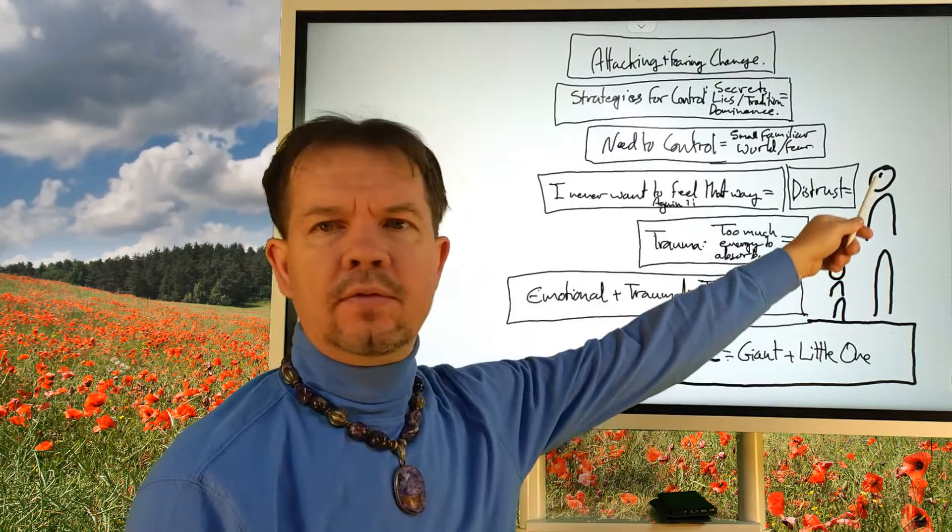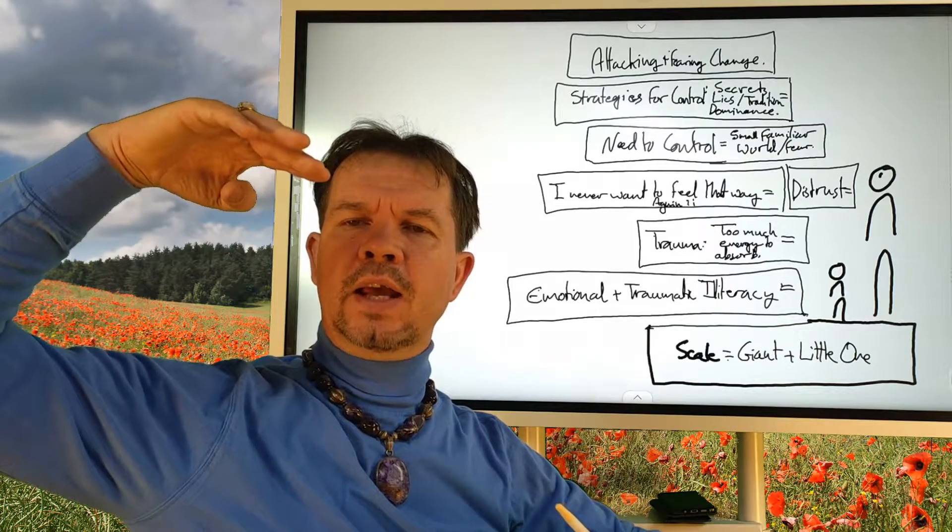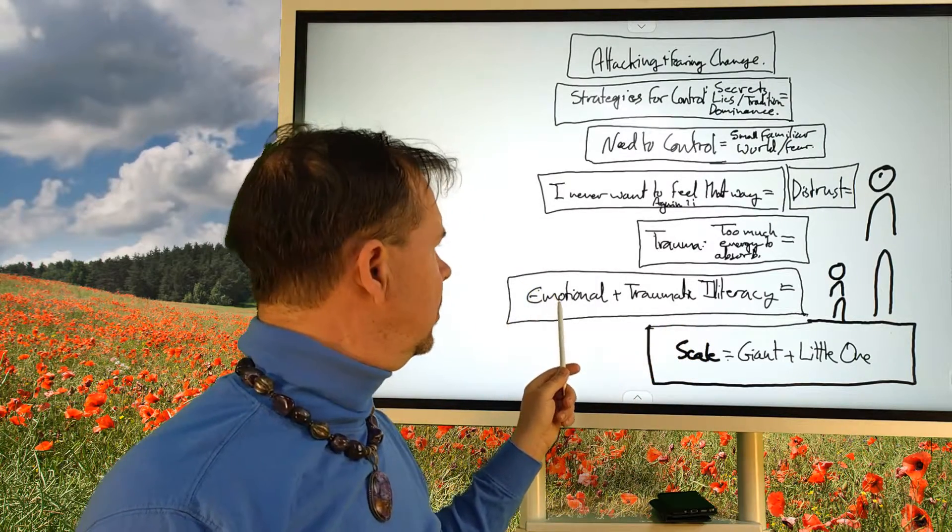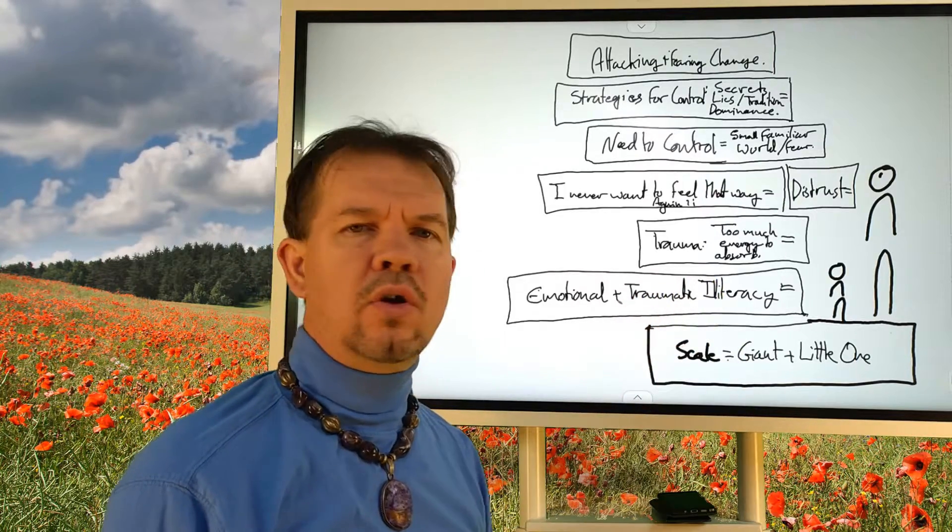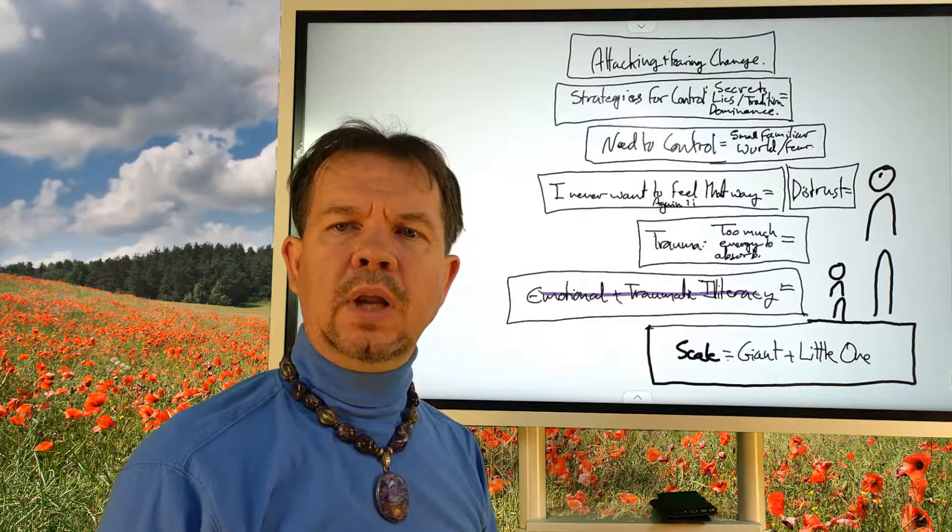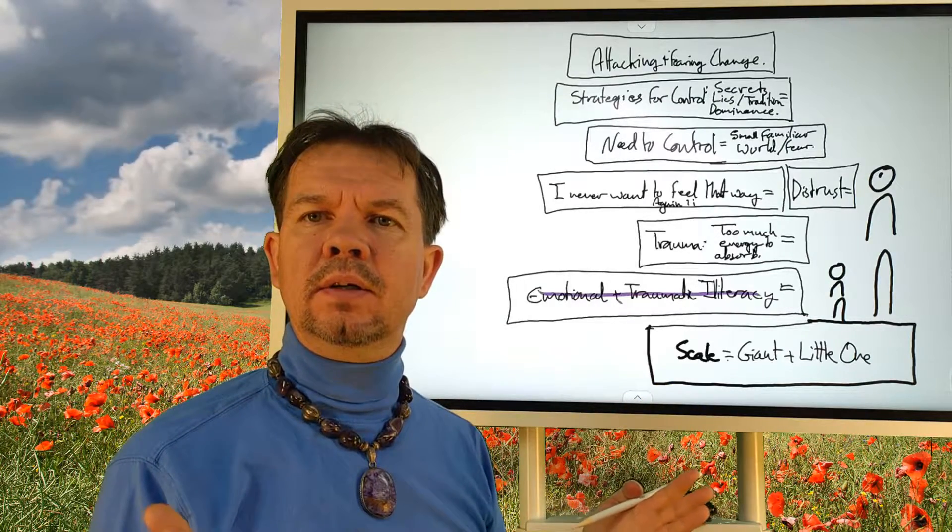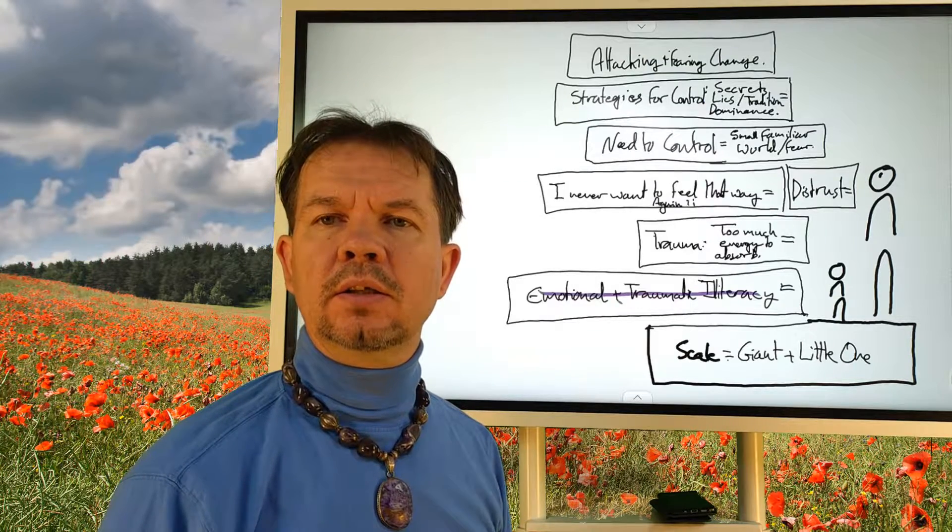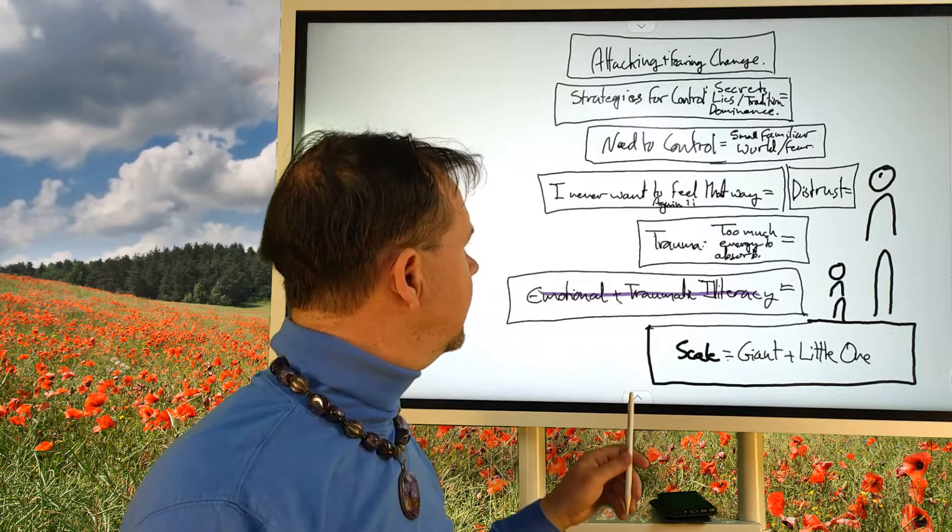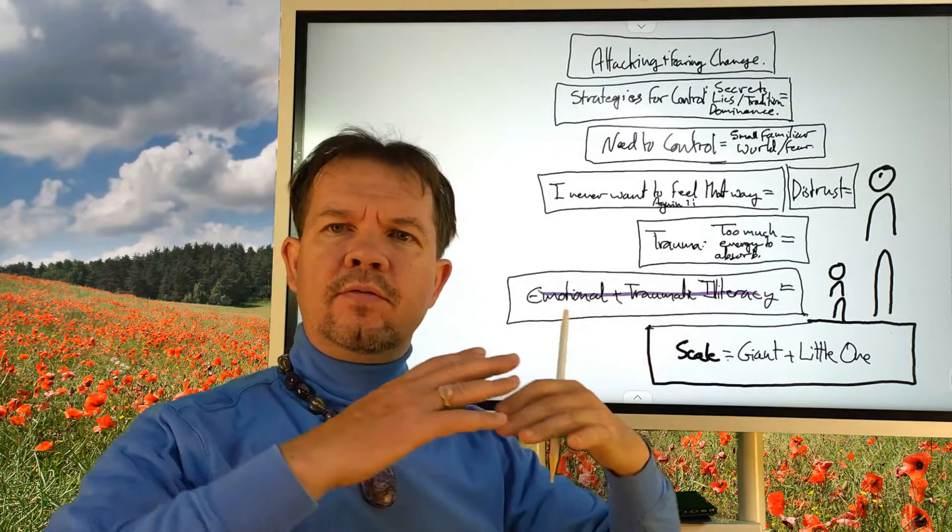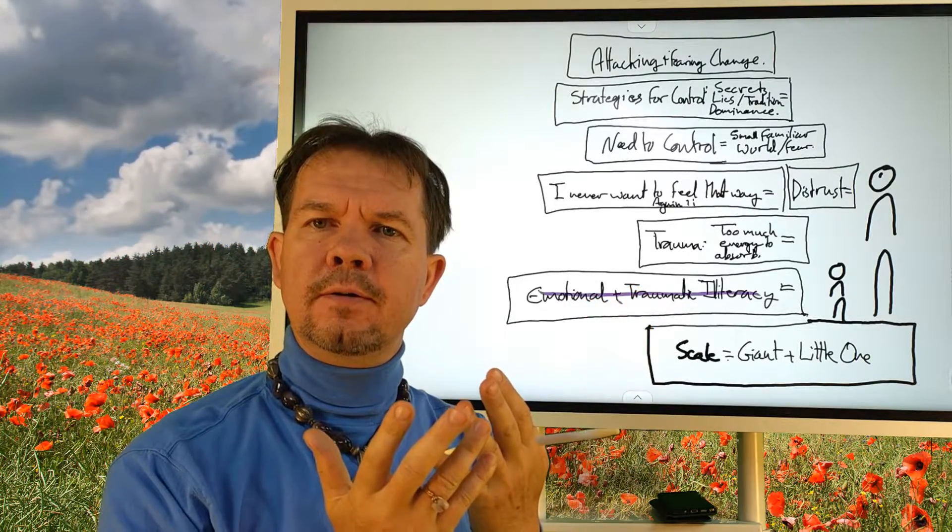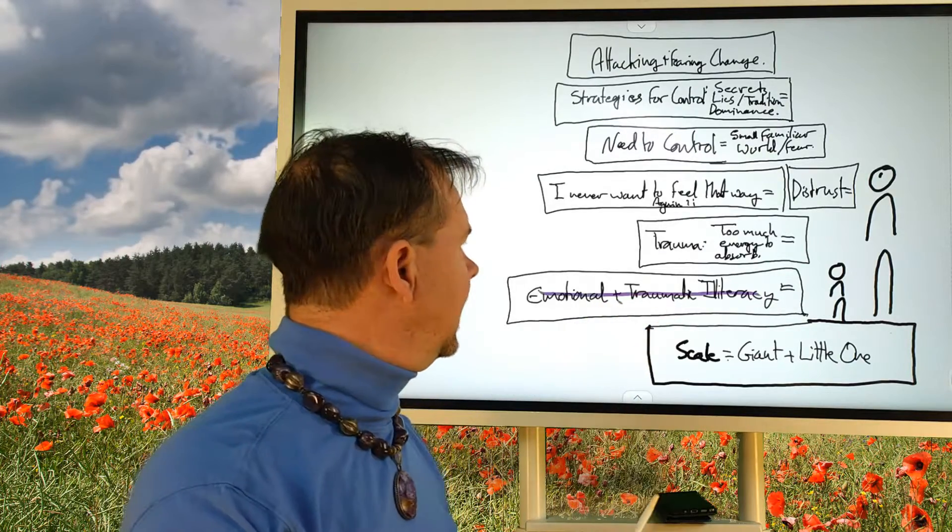Now, when you have an imbalanced relationship, a disproportionate relationship like this, and you combine it with institutionalized emotional and traumatic illiteracy, you have violation, you have trauma.